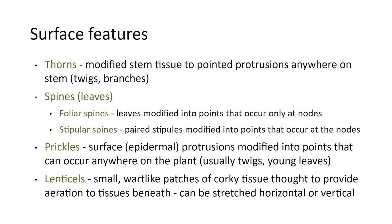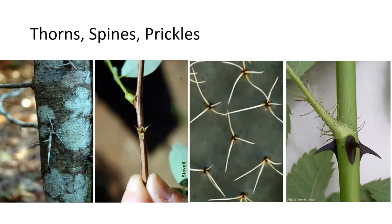Finally, lenticels — we've seen several examples of these. These are small little bumps or wart-like patches of corky tissue. They're thought to provide aeration to tissues underneath, and they can be stretched horizontal or vertical as the tree grows. Let's look at some examples of that.